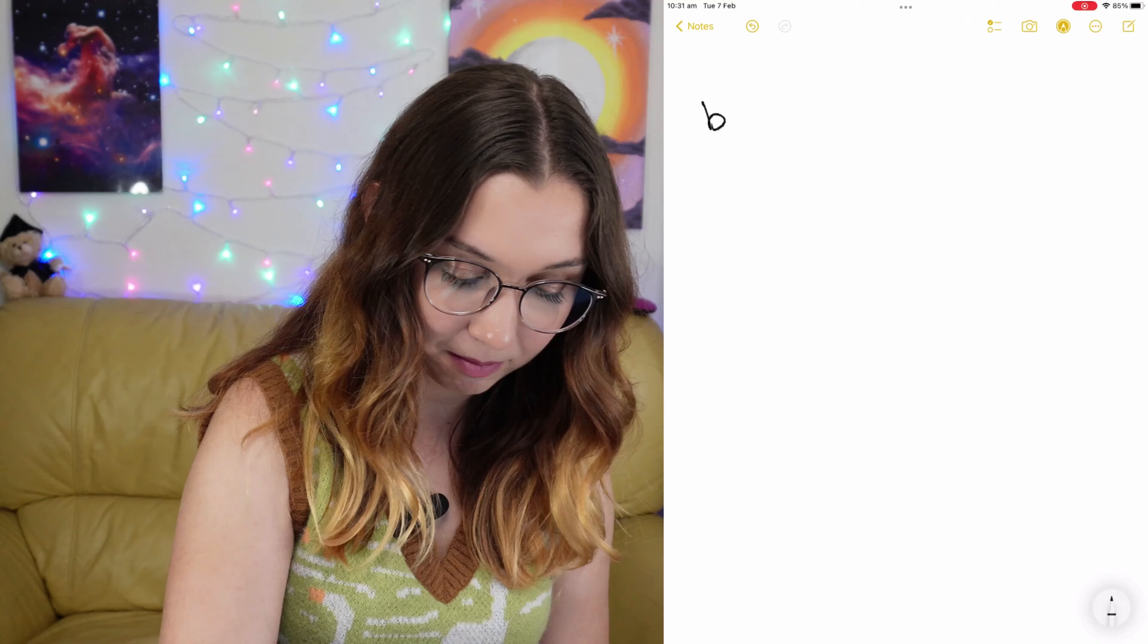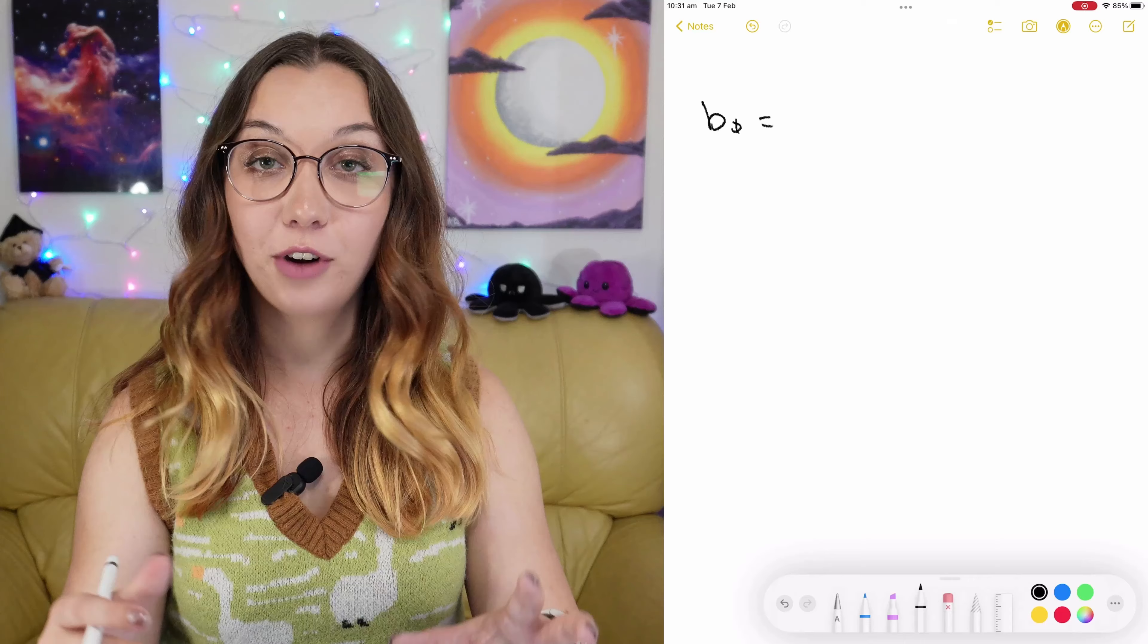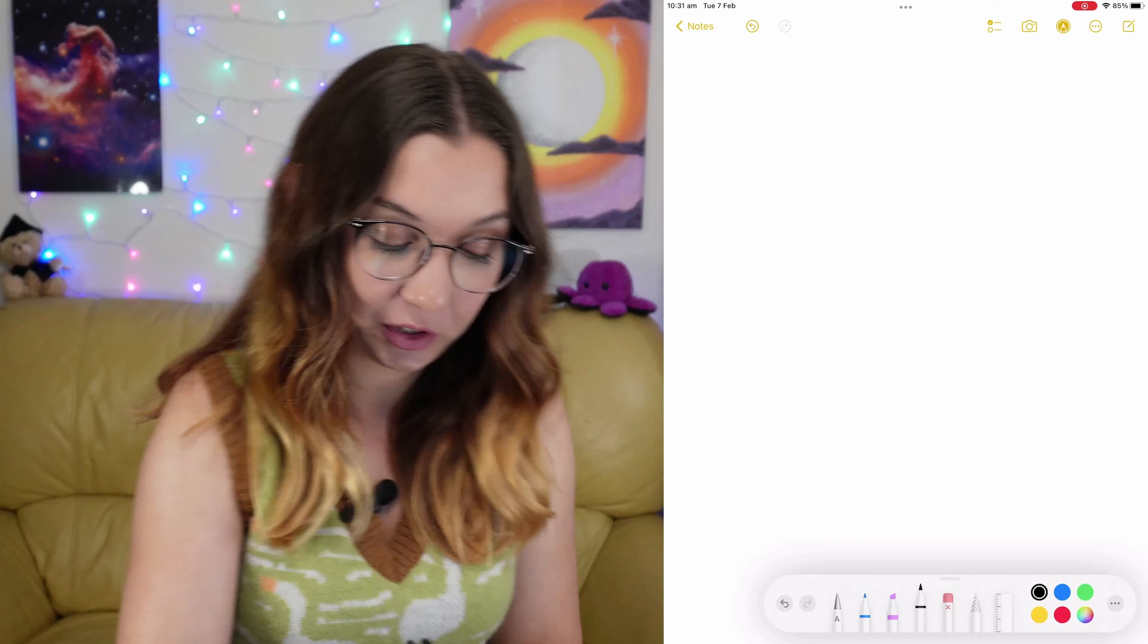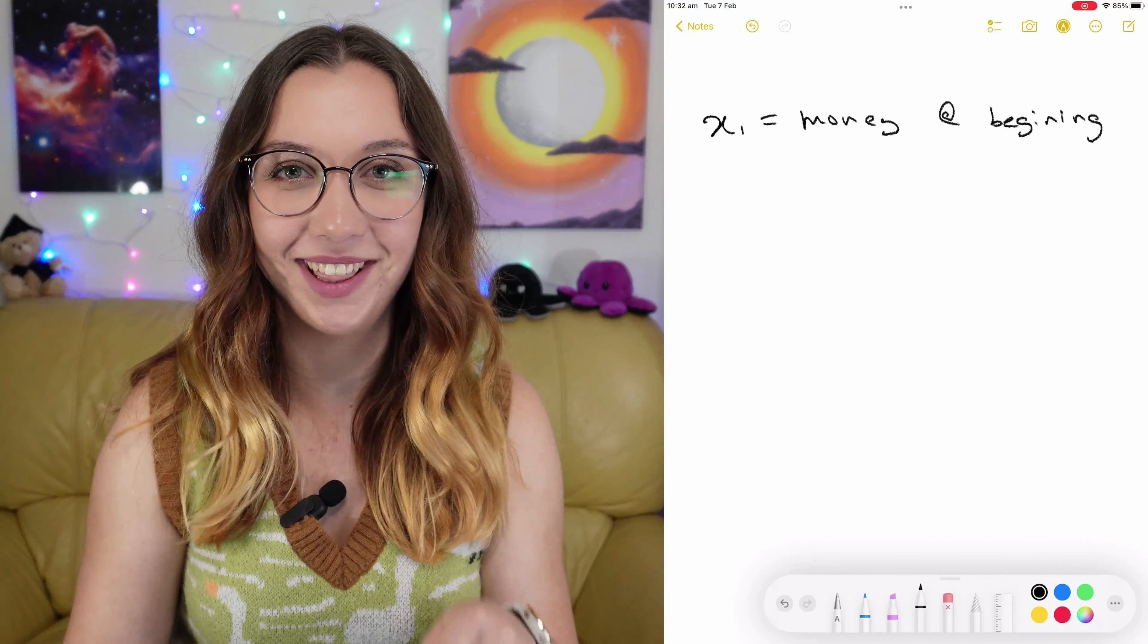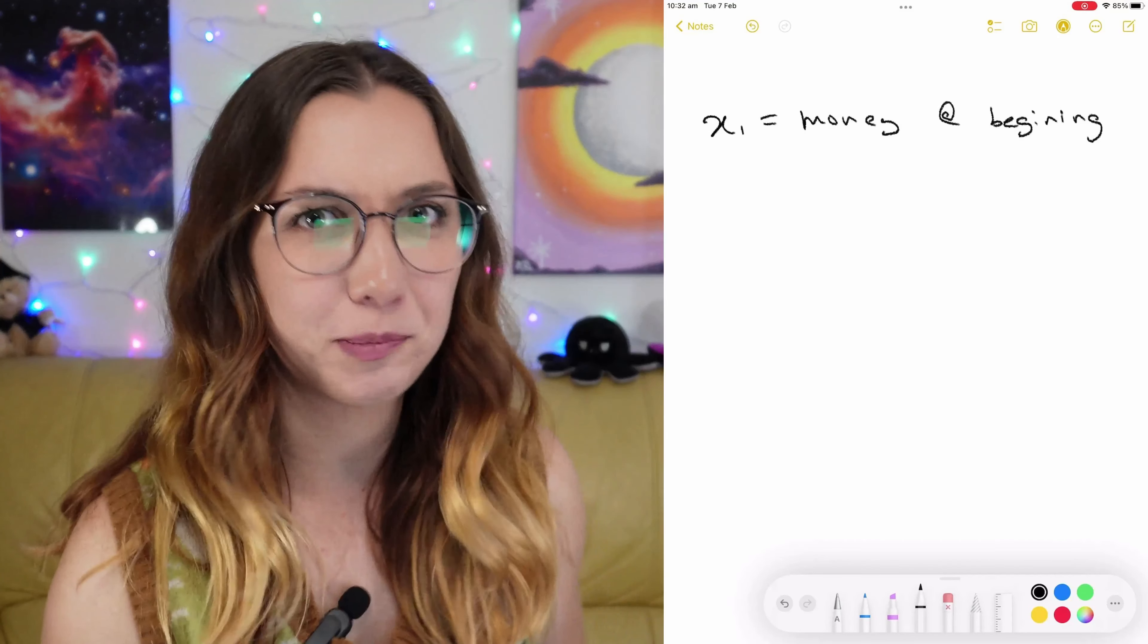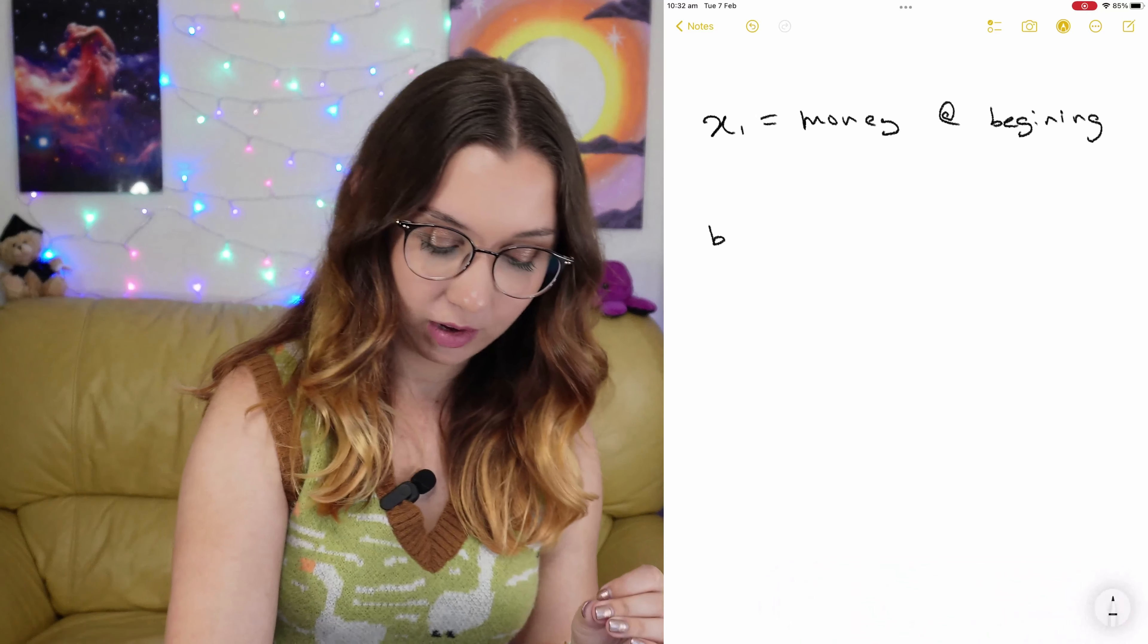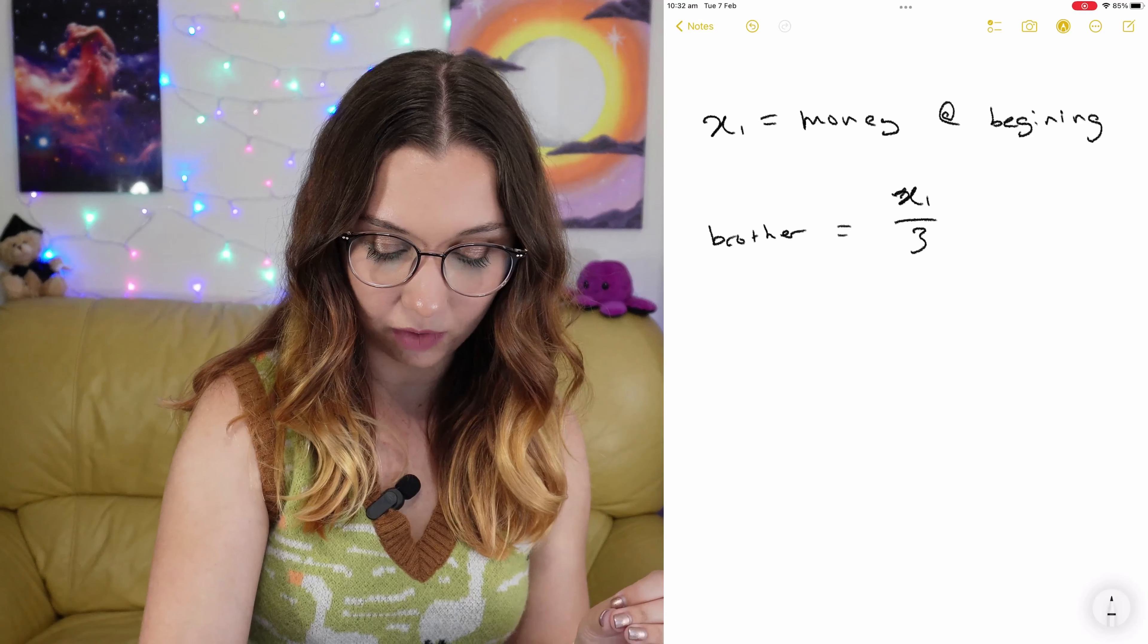Let's call the beginning of the day money something. This is the hardest part, trying to figure out what variables to call these things. Let's just go with the usual x1. x1 is money at beginning of day. He gives his brother one third of his money, so brother gets x1 over 3.